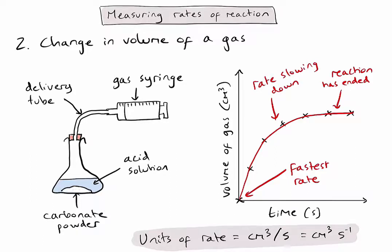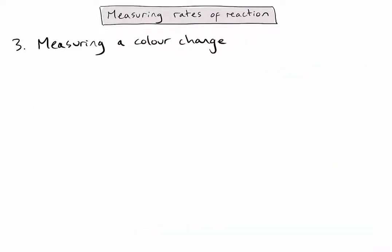Let's now look at a third example, which would be measuring colour changes. In this case, my reaction must either produce a precipitate, or I may use an indicator that changes colour at a certain point in the reaction.